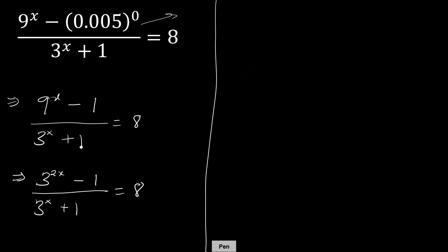The numerator as 3 raised to 2x minus 1, on 3 raised to x plus 1. Now with the difference of 2 squares, a squared minus 1 is the same as a squared minus 1 squared, that is a plus 1 times a minus 1.